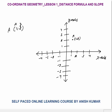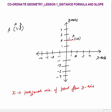What is the meaning of x-coordinate? When I say x-coordinate, it simply means the horizontal distance of that point from the y-axis. The horizontal distance is 1, that's why the x-coordinate is 1.